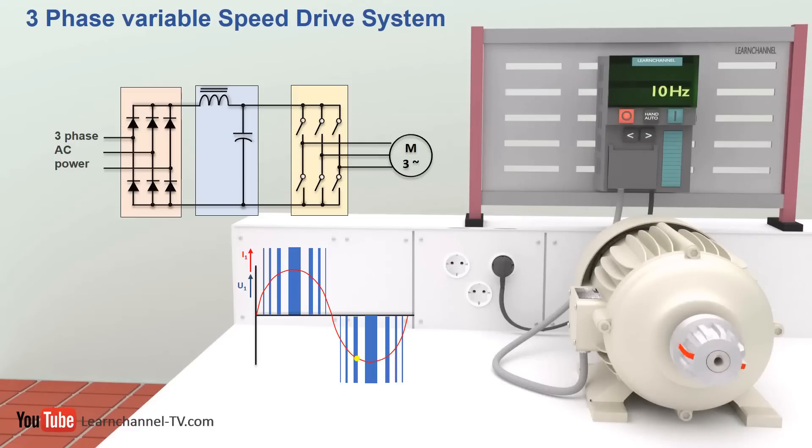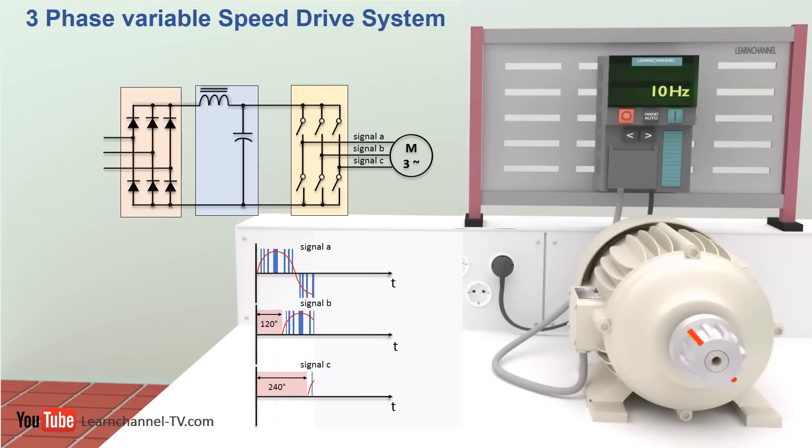The inverter output is not a true sine wave but an approximation based on PWM or Pulse Width Modulation. This Pulse Width Modulation scheme works because the motor coils are large inductors which do not allow current to pulse like the voltage.